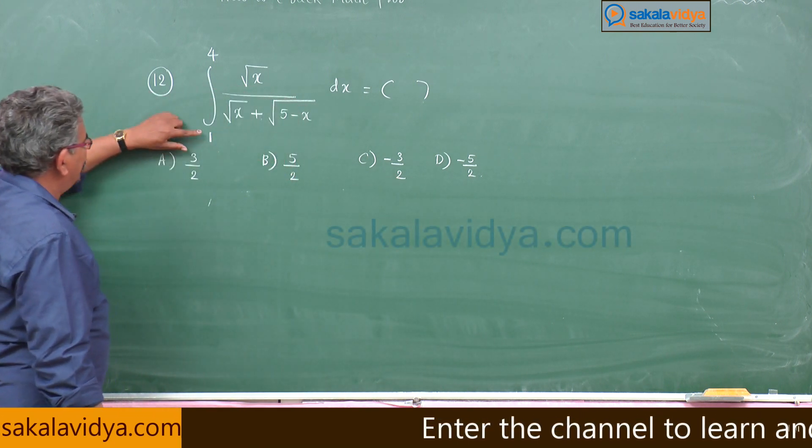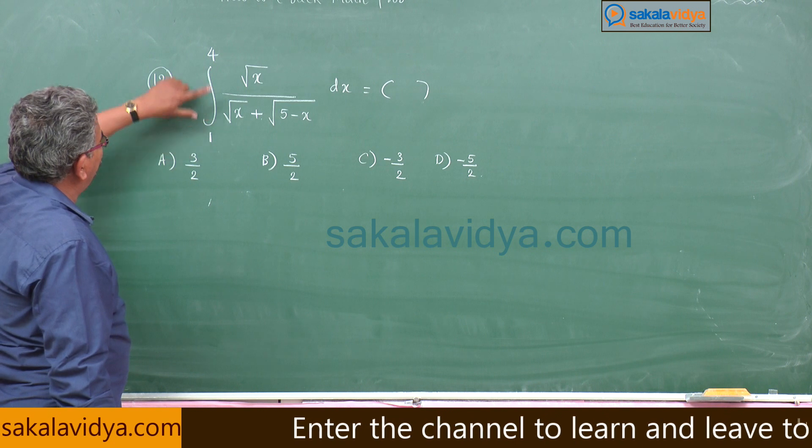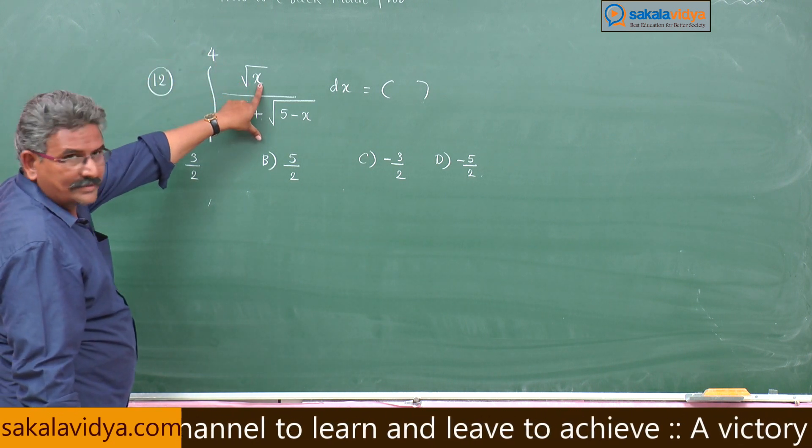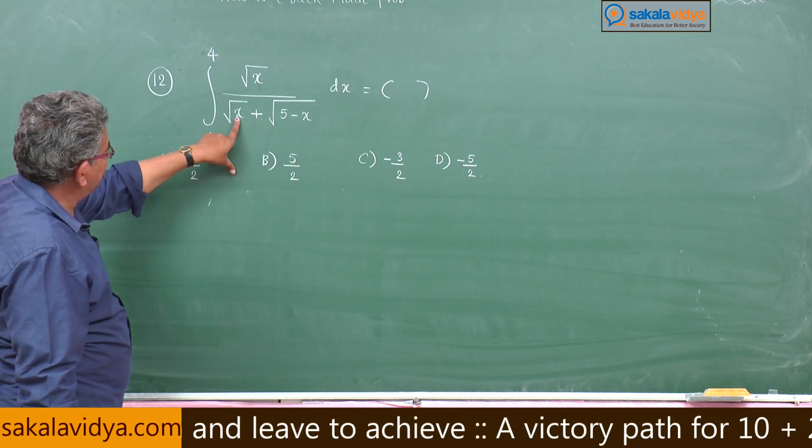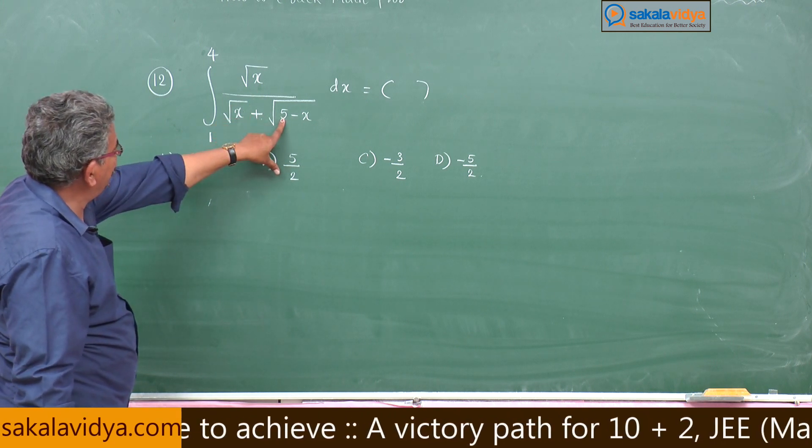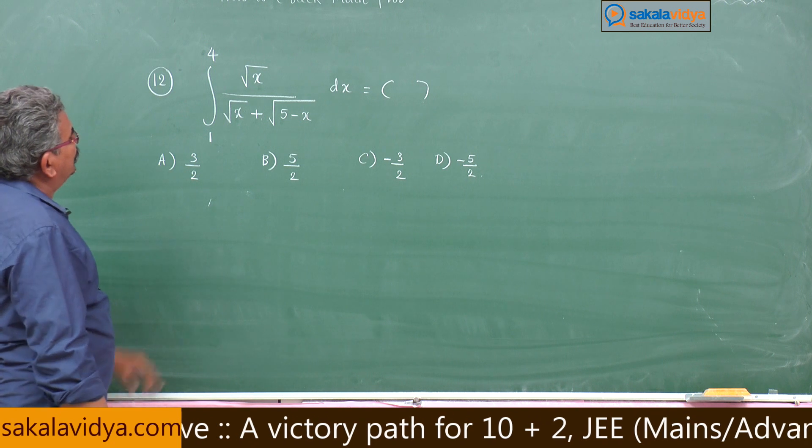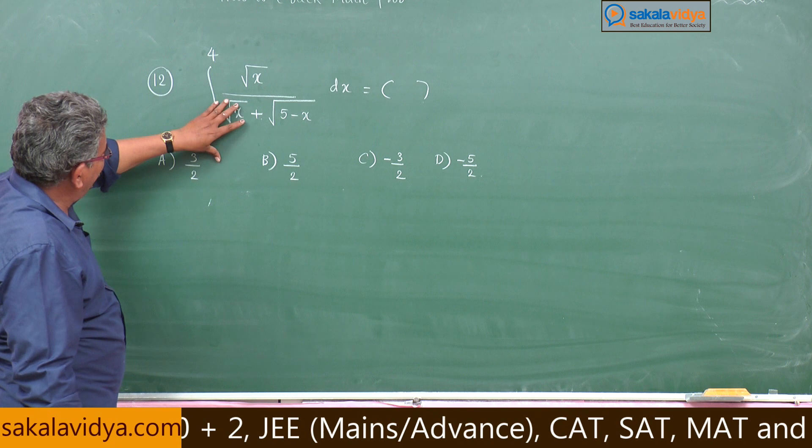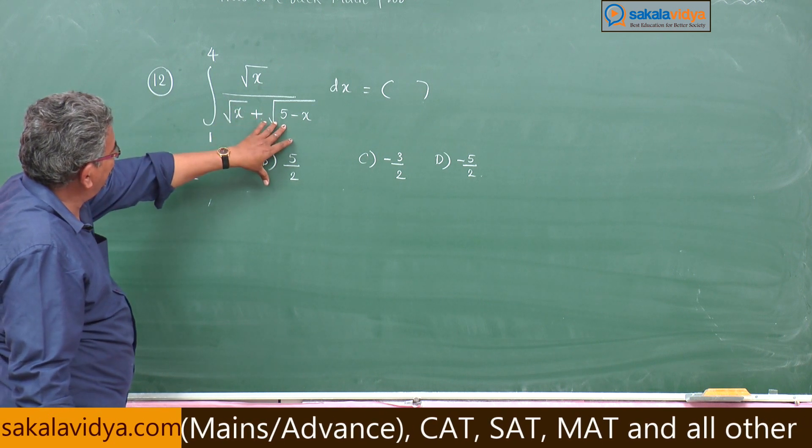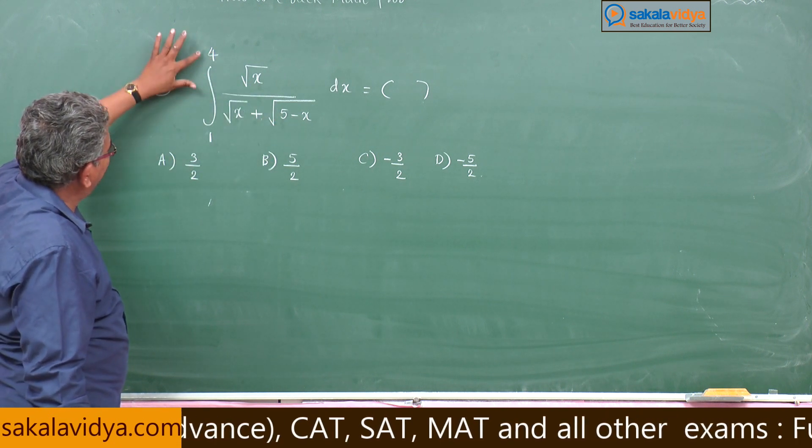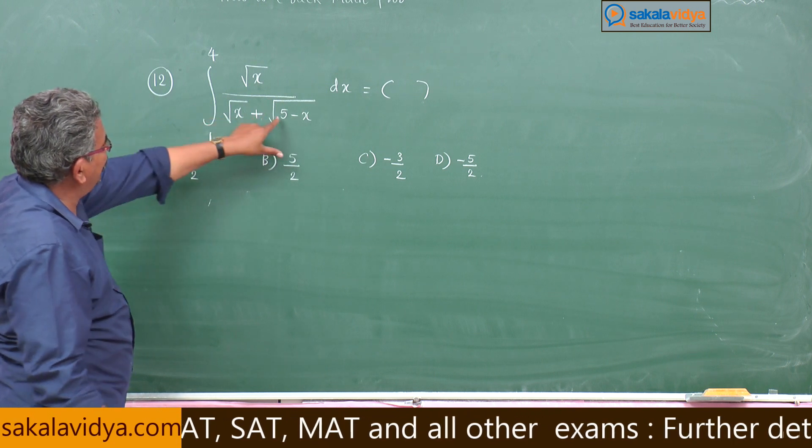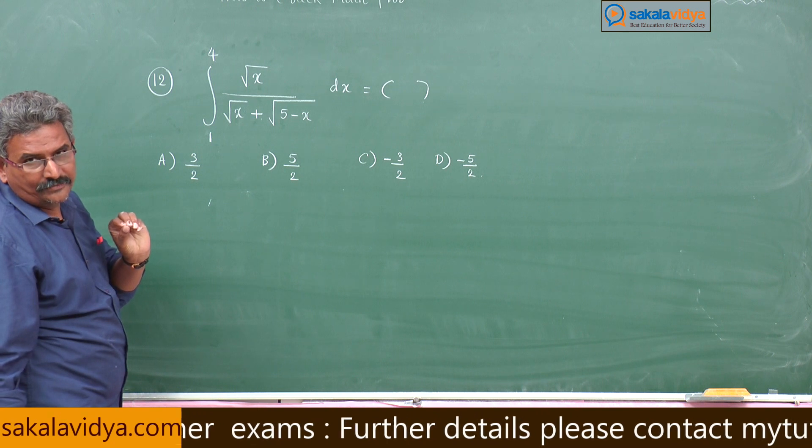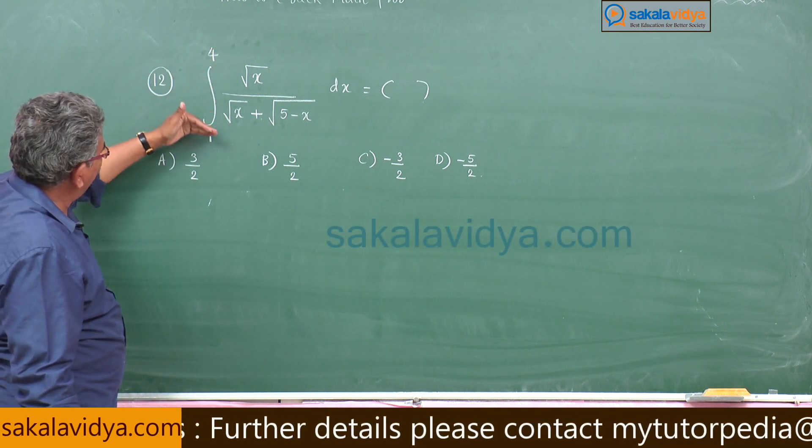See this is a definite integrals problem. If you observe a to b, this is root f of x, this is also root f of x plus root of - you can say this is equal to f of x, this will be f of x plus f of 4 plus 1 phi minus x, f of a plus b minus x is there.